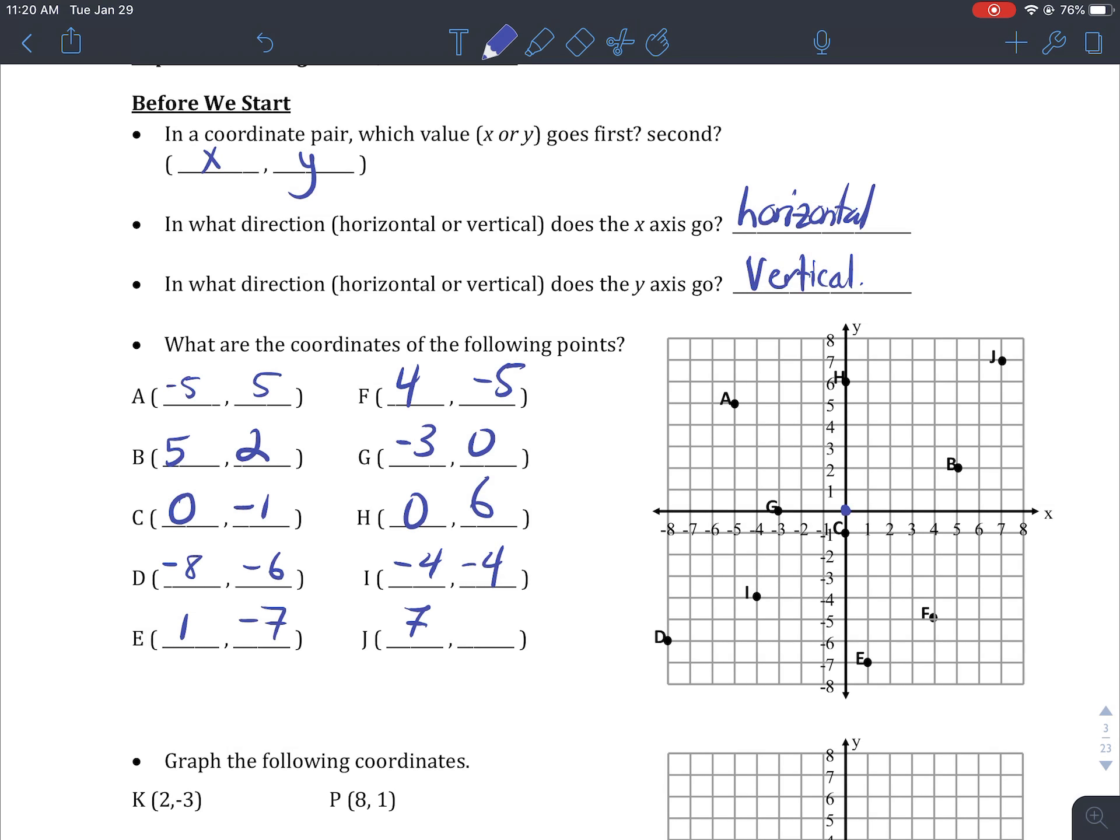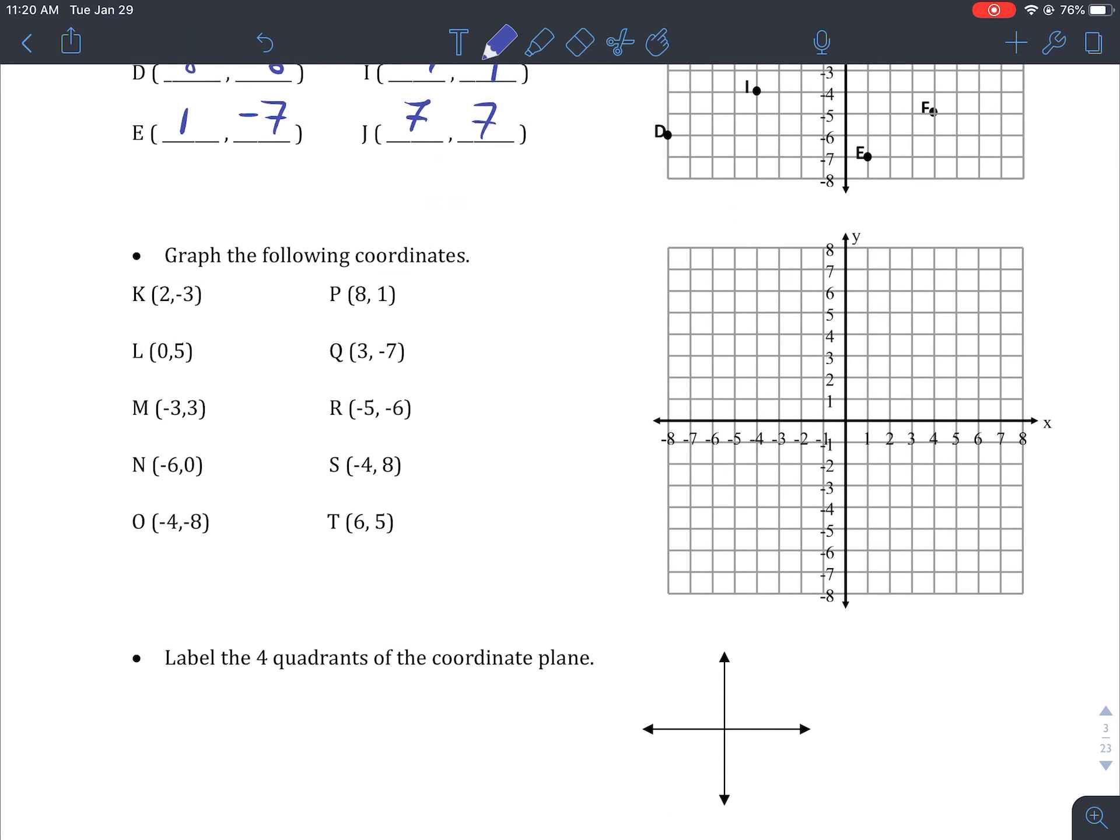Point I is going to be negative four, negative four. And point J is going to be seven, seven.